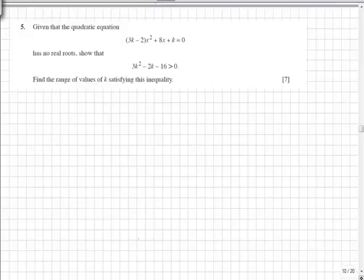So in the first instance we need to label our quadratic coefficients a, b and c. For no real roots we know that b squared minus 4ac is less than 0.